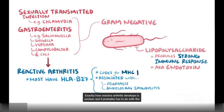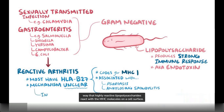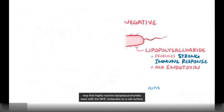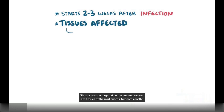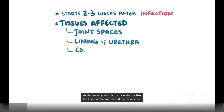Exactly how reactive arthritis develops is still unclear, but it probably has something to do with the way that lipopolysaccharides react with the MHC molecules on a cell surface. Because the immune system takes a little while to present foreign antigens and kick T-cells into gear, reactive arthritis often starts 2-3 weeks after an initial infection. Tissues usually targeted by the immune system are tissues of the joint spaces, but occasionally the immune system also attacks tissues like the lining of the urethra and the conjunctiva.